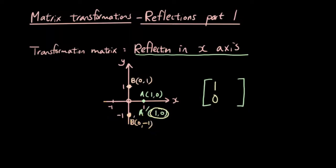And you put the answer from B dash into the second column of your reflection matrix. So therefore our reflection matrix, which we're going to use the symbol M to represent, is equal to 1, 0, 0, negative 1.